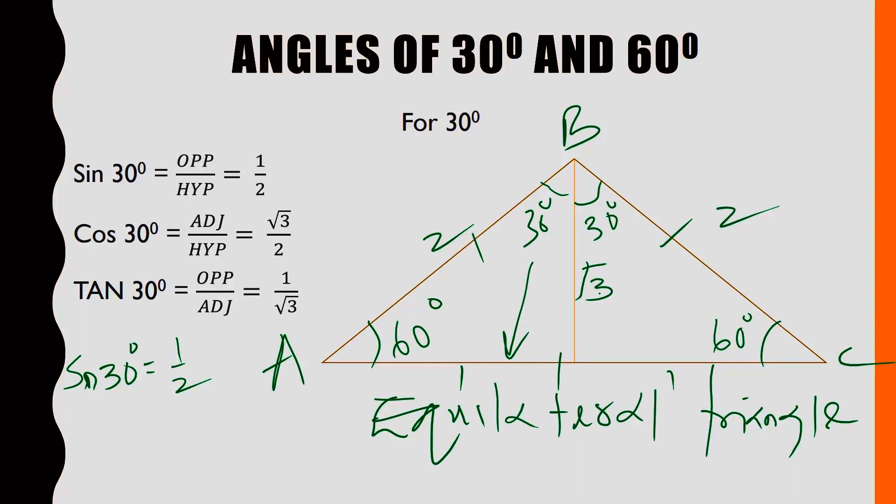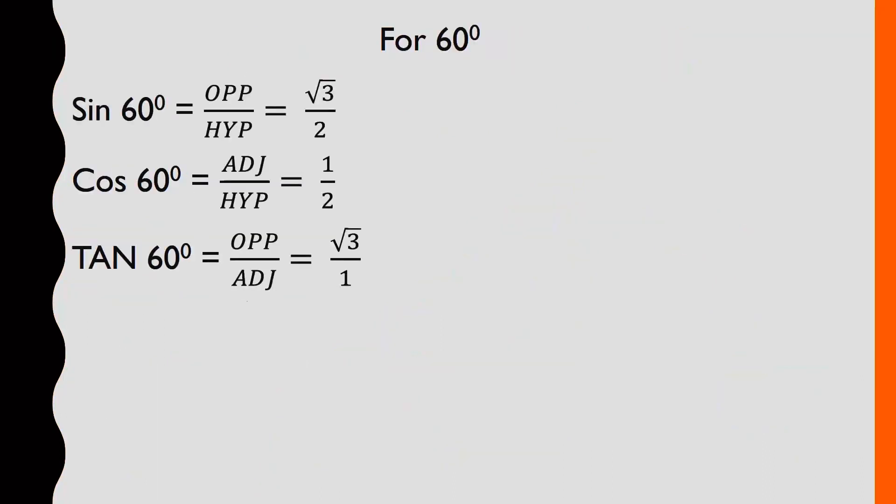Now, cos 30°, cos 30° is adjacent over hypotenuse. Where is the adjacent? This one becomes the adjacent, √3. So it will be √3/2. Then tan 30° becomes what? Tan 30°, opposite over adjacent. It will be 1 over √3. So you take note of that. That is for the 30 degrees.